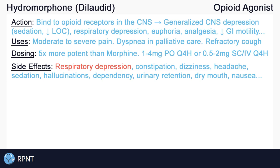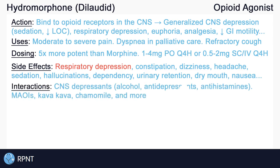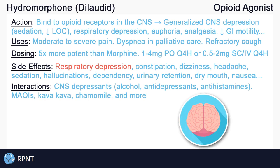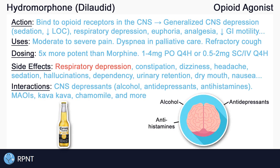Other side effects include drug dependency, urinary retention, dry mouth, nausea, and more. Hydromorphone causes CNS depression, which may worsen if used with other CNS depressants, such as alcohol, antidepressants, antihistamines, and more.